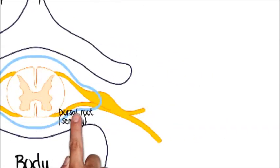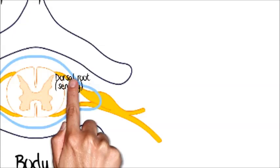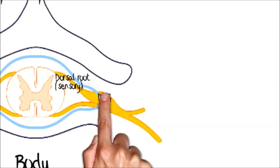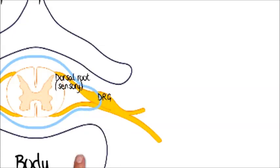Now let's label the dorsal root and then the dorsal root ganglion where the cell body is located and the spinal nerve which is a mixed nerve before it divides into the dorsal root and the ventral root.